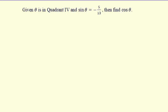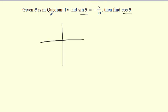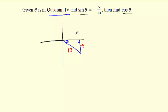Now: given the sine of some angle theta equals -5/13 and theta is in quadrant four, find the cosine. Draw the x-y axis, quadrant four. The reference triangle has theta coming from the origin, right angle down. Sine is opposite over hypotenuse: opposite is 5, hypotenuse is 13. The negative means I went down five, so I'm in the fourth quadrant. I need the missing side to find cosine.